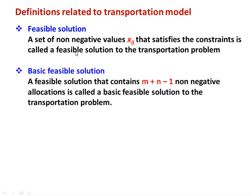The second definition is basic feasible solution. A feasible solution that contains m+n−1 non-negative allocations is called a basic feasible solution to the transportation problem. Here m is the number of sources (horizontal rows) and n is the number of destinations (vertical columns). If you have m+n−1 allocations in the transportation matrix, it is called a basic feasible solution.